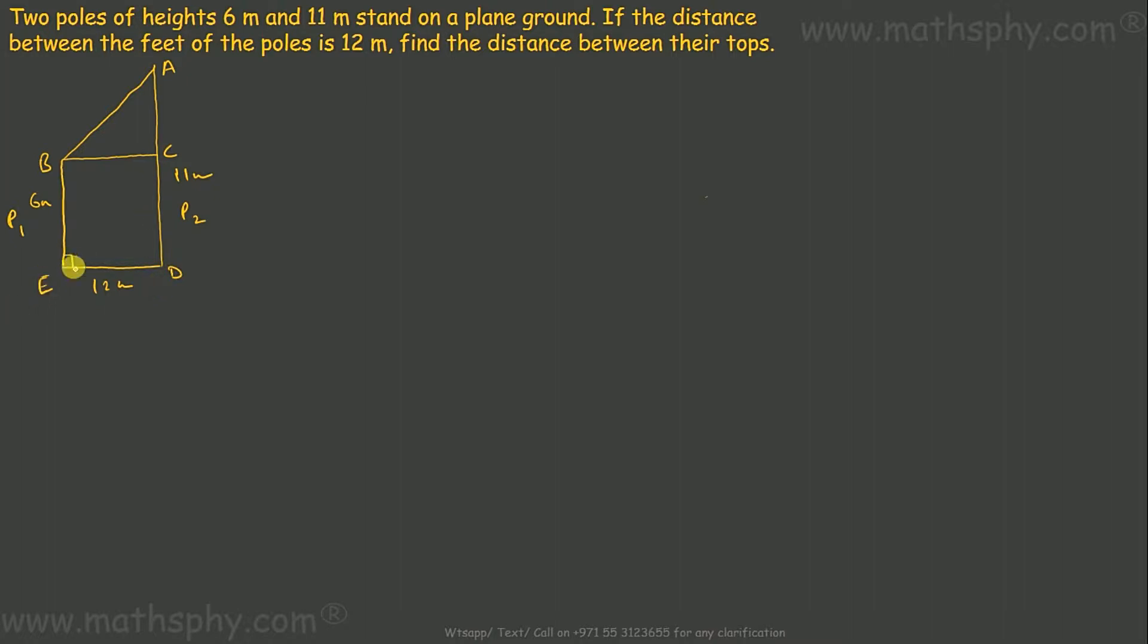90 degrees, 90 degrees. If this is 12 meters, this will also be 12 meters. BC will be equal to ED. This is 6, complete is 11, so this will be 6 and this will be 5. 6 plus 5 is 11.